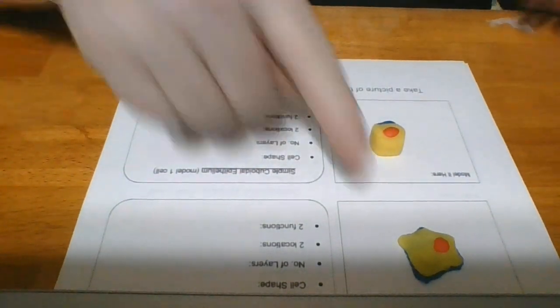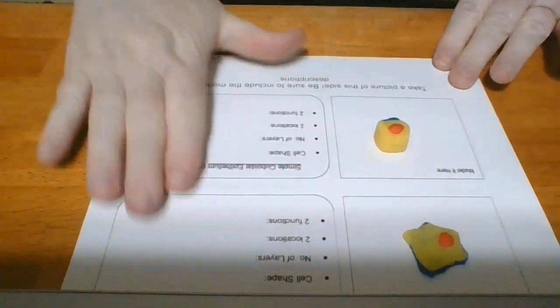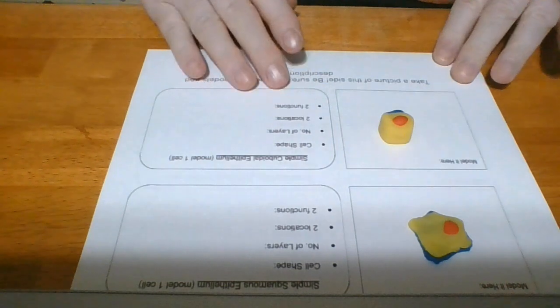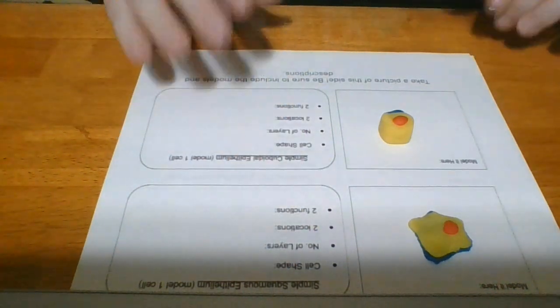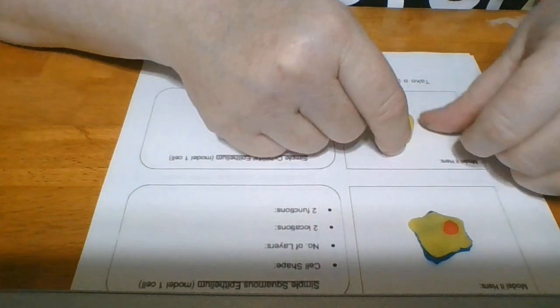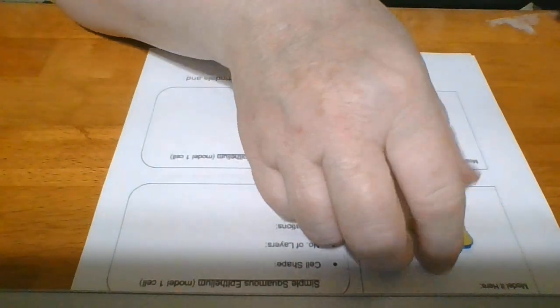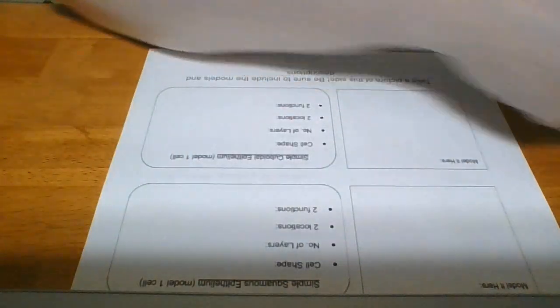There we go. And it tends to be right about the center of the cell. So there we have a simple squamous, a simple cuboidal. Now for you, when you're doing yours, you have all this information to fill out over here after you finish. You're going to do all the modeling first. So I'm going to set these aside. Remember, this was my simple cuboidal. This was my simple squamous. But now I need to look at the back of the paper.